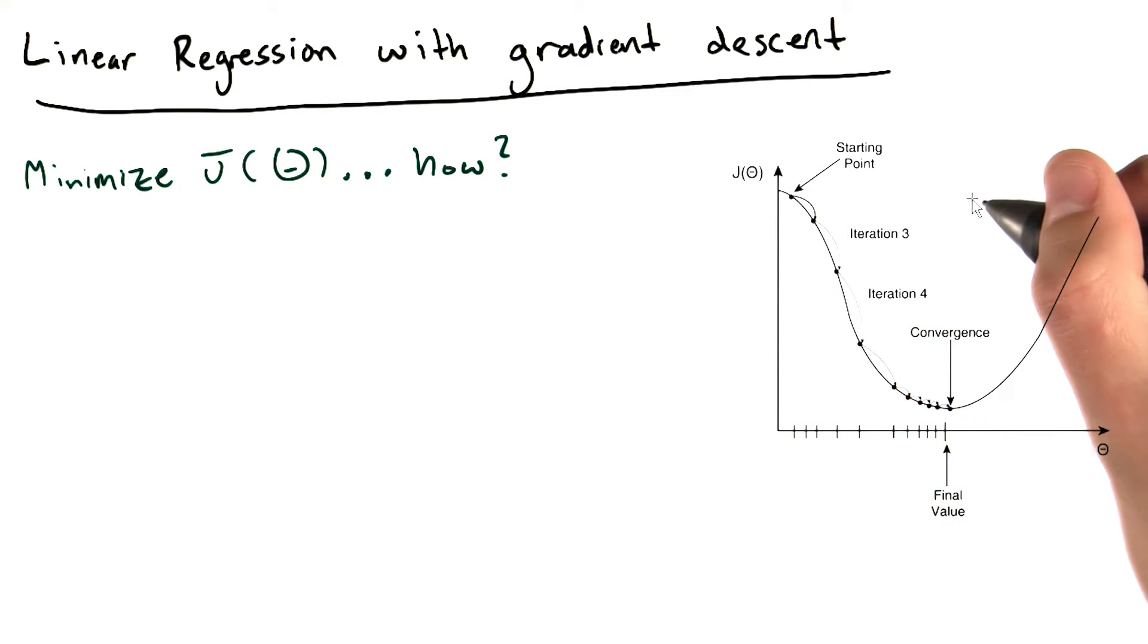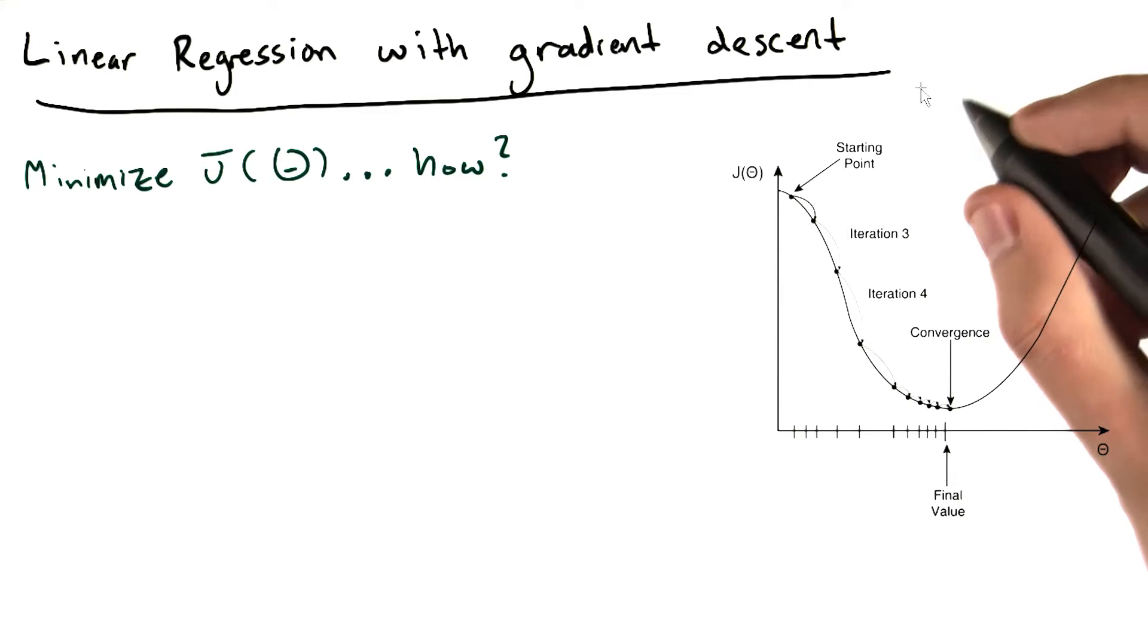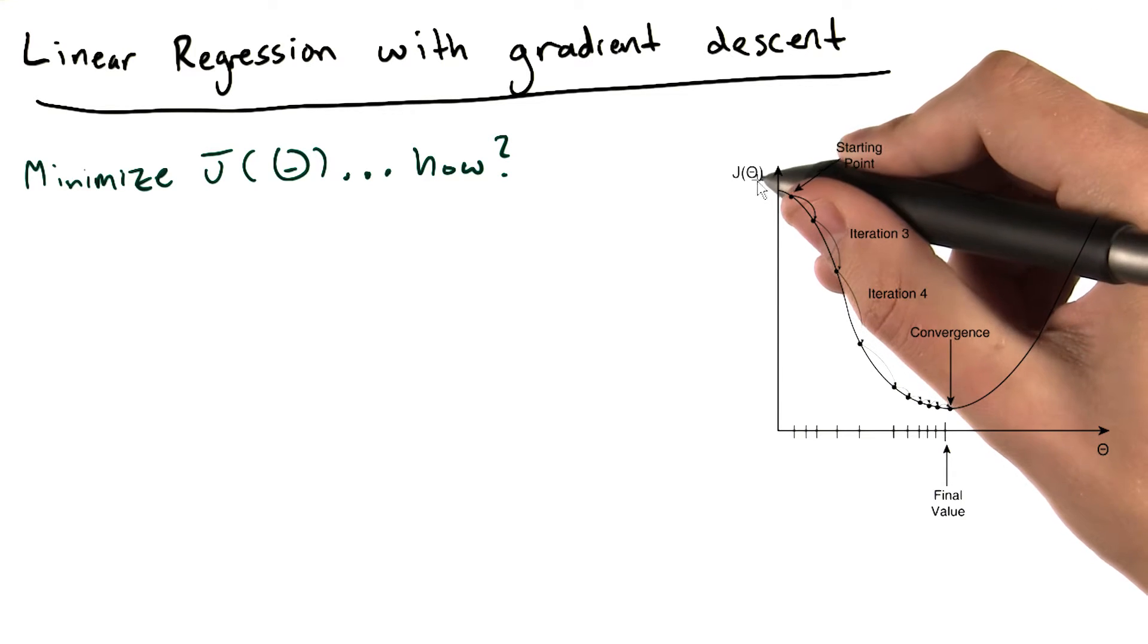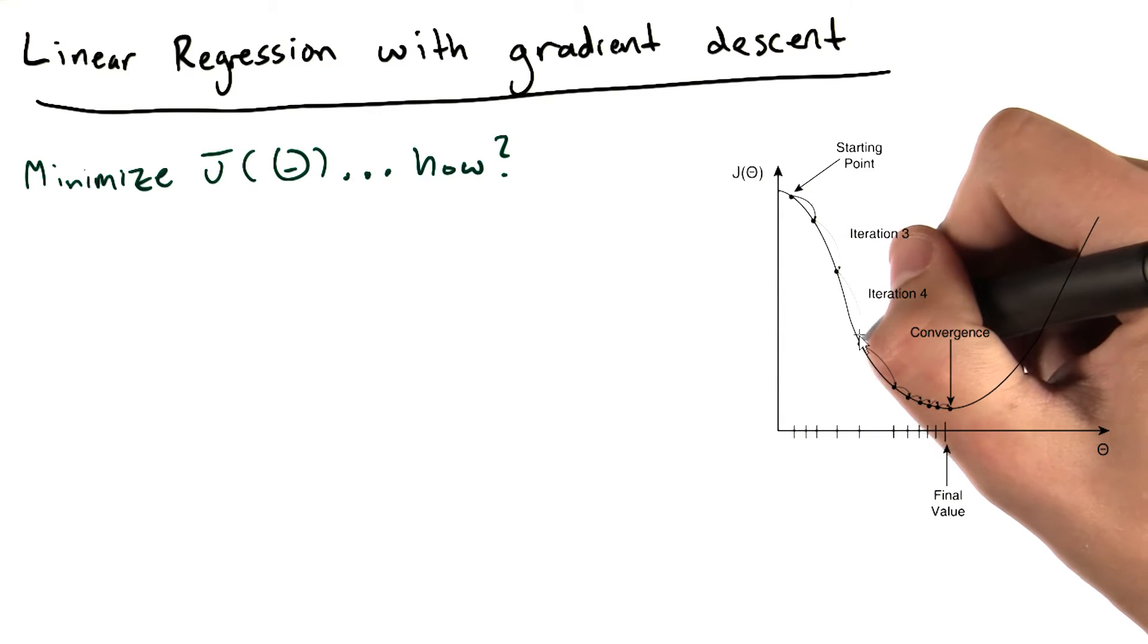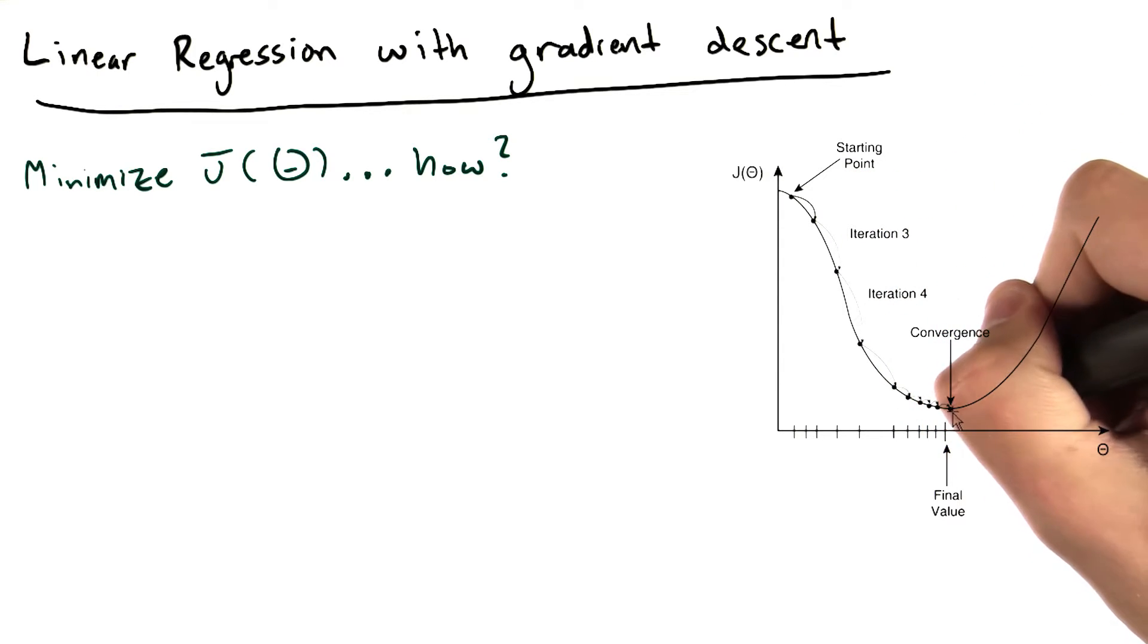Here's a one-dimensional depiction of what gradient descent might look like. We have some starting point where J of theta is large, and we continue to try new values of theta, and J of theta keeps getting smaller and smaller until we arrive here, the final value.